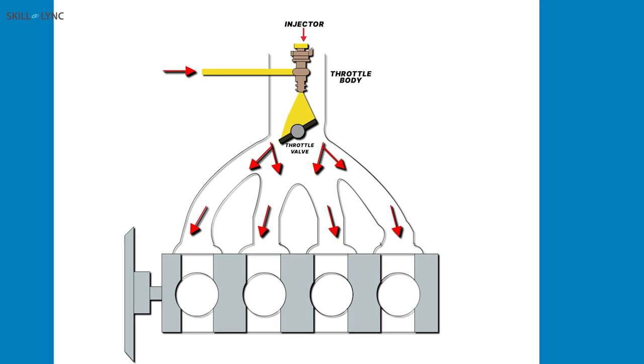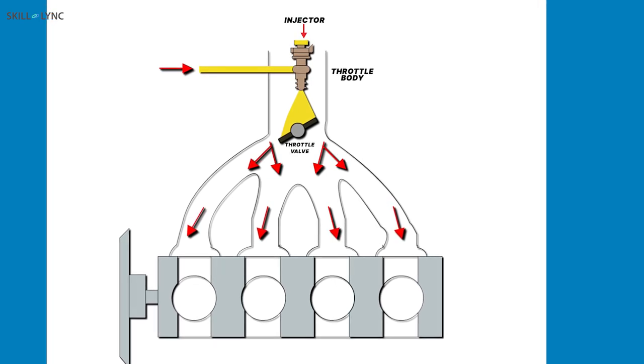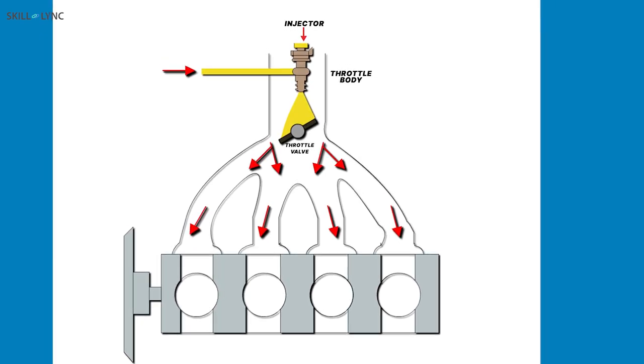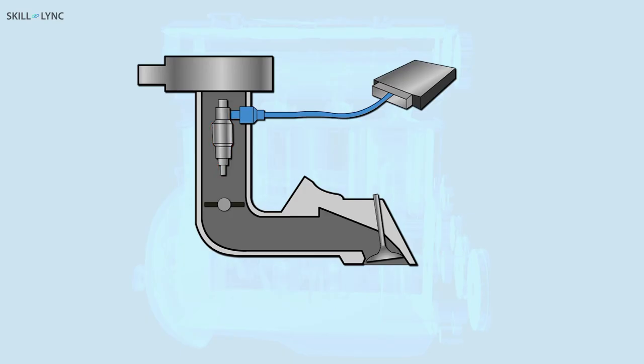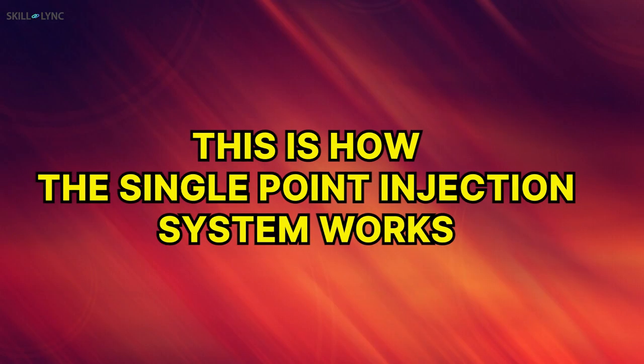The injector is controlled by the ECU and it is placed over the throttle valve, which controls the airflow. The fuel from the fuel tank is pressurized by means of an electronic fuel pump and it is sent to the injector. On receiving the signals from the ECU, the injector injects the fuel into the throttle body. Then, the fuel mixes with the air and enters the inlet manifold of the engine through the throttle valve. This is how the single point injection system works.